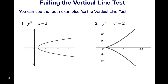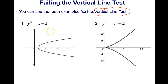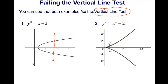Now let's check whether these graphs fail the vertical line test. Drawing a vertical line through the first graph, it passes through two points. This means it failed the vertical line test and is not a function. Drawing a vertical line at another point, it again passes through two points — so this is also not a function.